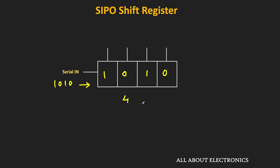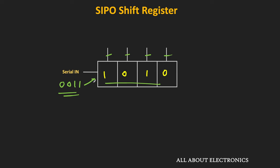Many times it is required that once the data is shifted into the register, it should not change until new data gets loaded. For example, let's say currently 1010 is stored inside the shift register, and the new data to be shifted in is 0011. Until we shift this new data inside the shift register, these 4 outputs should not change, because these 4 pins are used for driving other circuits or for data manipulation. But in this basic design, that will not happen — after 4 clock cycles, the new data will be shifted in and the content of the register will change.